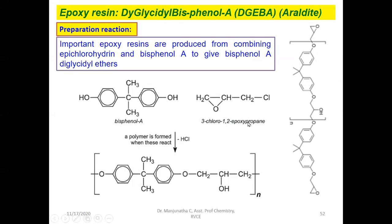The IUPAC name of epichlorohydrin is 3-chloro-1,2-epoxy-propane. The epoxy group is present between the first and second carbon atoms. This is one monomer, and the other monomer is bisphenol A, which was also used in polycarbonate synthesis. In the presence of NaOH, bisphenol A undergoes condensation polymerization with epichlorohydrin, leading to the formation of epoxy resin. This is the repeating unit observed in epoxy resin, or DGEBA (araldite).